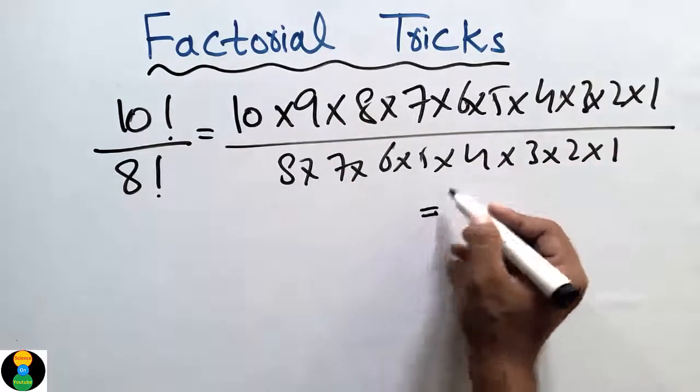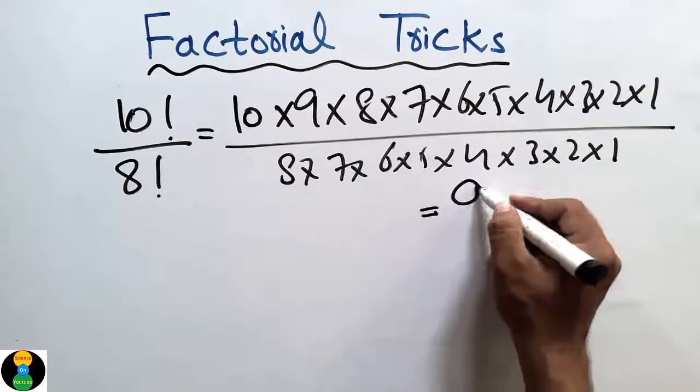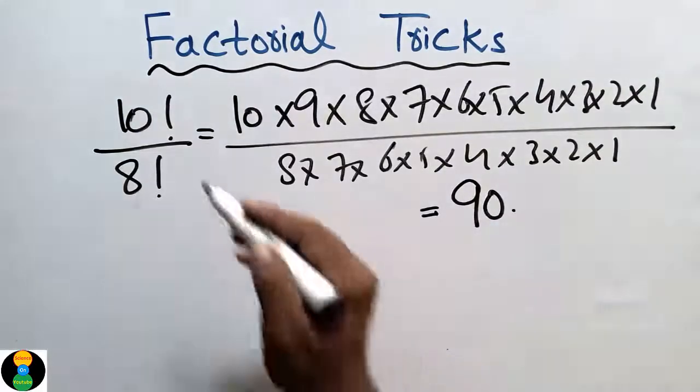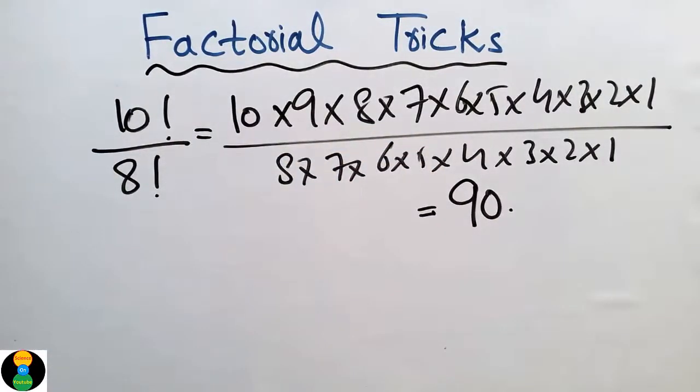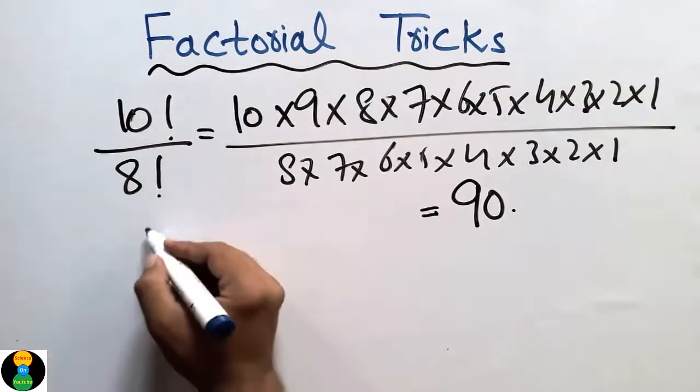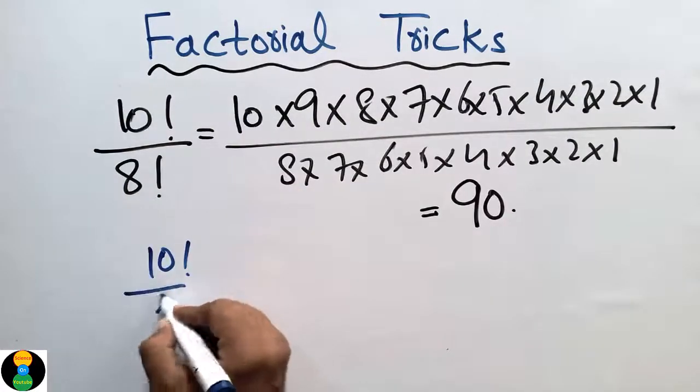It comes out to be 90. Now this equation can be solved just in one step. How? 10 factorial divided by 8 factorial. We know that the 8 factorial can be cancelled.